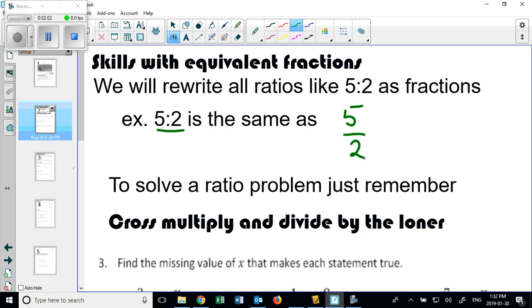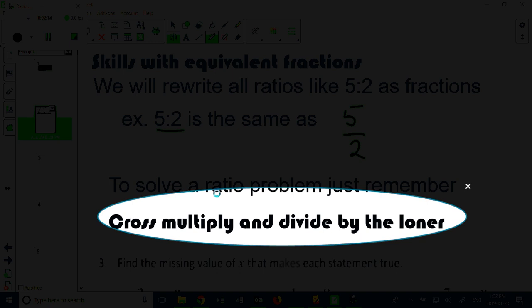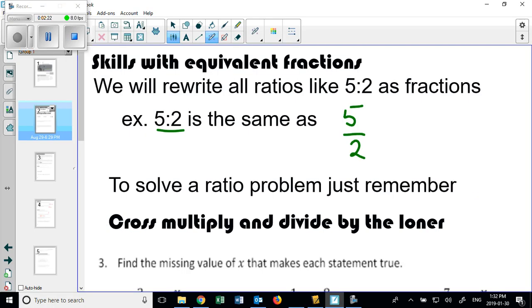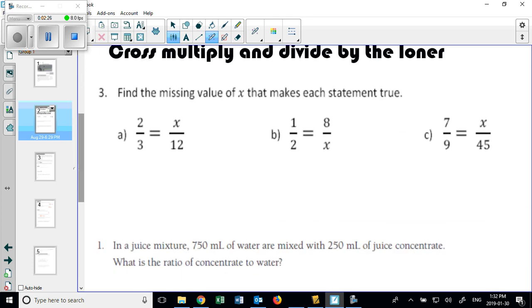And to solve a ratio problem, remember, you guys will remember this. Cross-multiply, divide by the loner, right? Now, I showed you guys that a bit on the board. Some of you know this from me. Rate 10, that's the phrase that pays. We'll use that. Let's just do a few examples here and make sure we know how to do that with a calculator. And if you ever forget your calculator, you could use your phone, but if it's a test, I'll need to use your calculator.